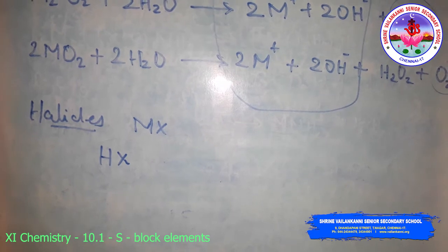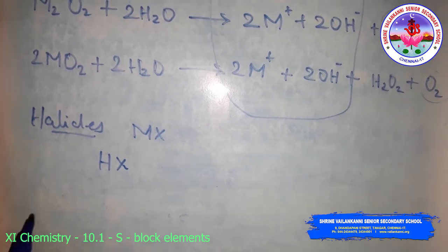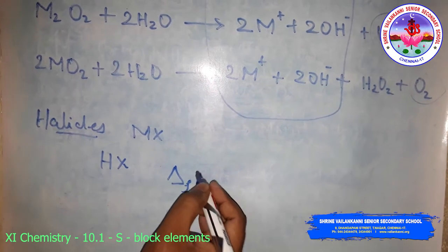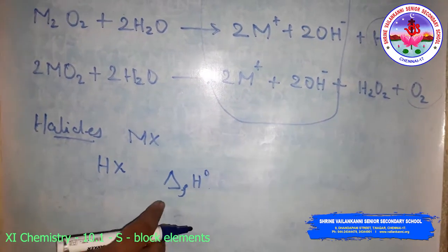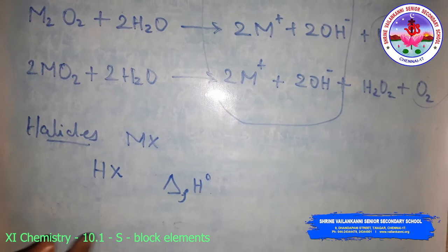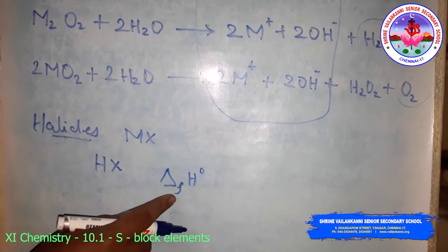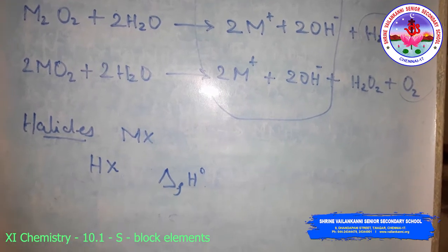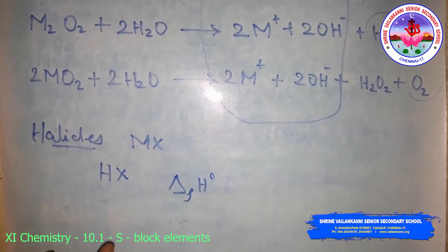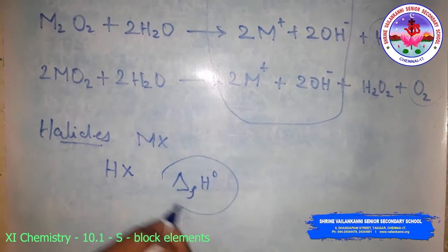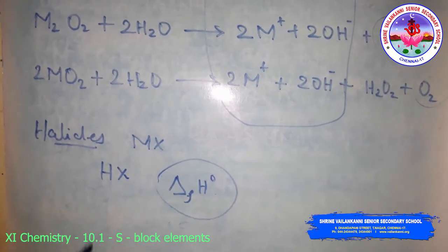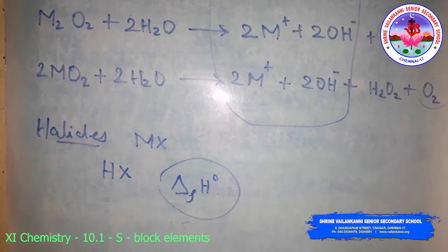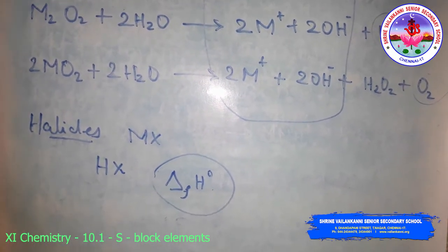All the halides have a high negative enthalpy of formation, that is ΔHf°. The ΔHf° values for fluorides become less negative as we go down the group, while the reverse is true for bromides and iodides — the given metal's enthalpy of formation always becomes less negative from fluoride to iodide.